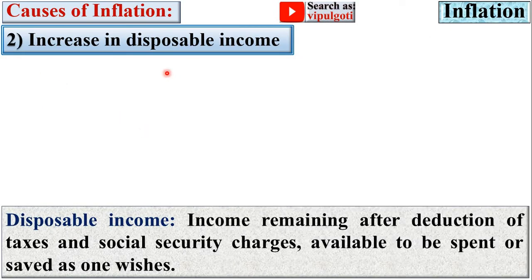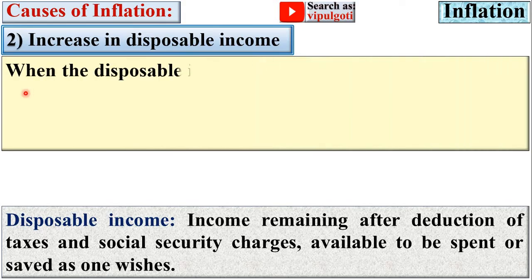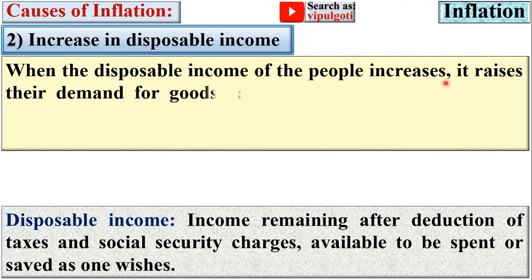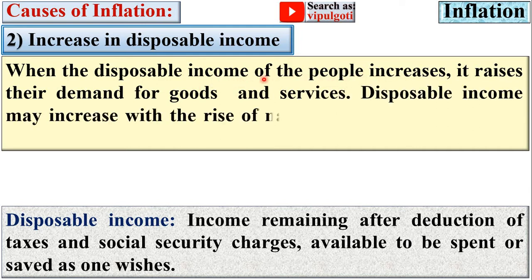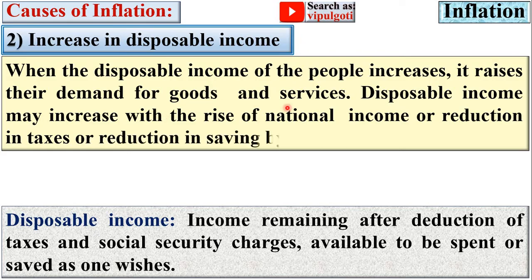Next: increase in disposable income. Disposable income is the income remaining after deduction of taxes and social security charges, available to be spent or saved as one wishes. When the disposable income of people increases, their capacity to spend raises the demand for goods and services. Disposable income may increase with the rise of national income, reduction in taxes, or reduction in savings by people.